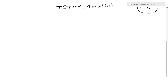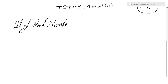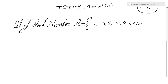After the set of irrational numbers, we have the set of real numbers. It is expressed using capital R. It is actually the set of both rational and irrational numbers. That means the elements can be minus 1, minus 2.6, pi, 0, 1, 2, 2.5, and so on.